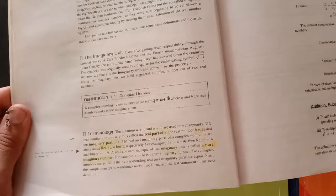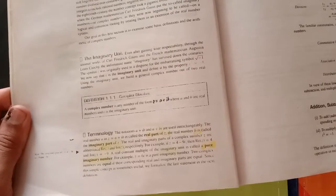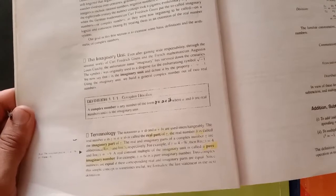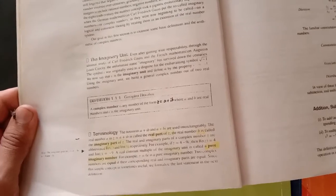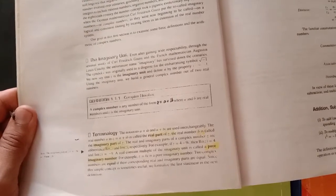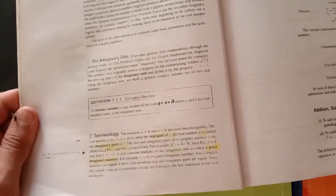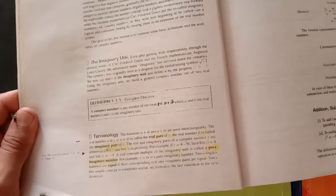Yaha par mukhtalif terminologies ishtimal hooti hai. Pehle ham us ka notation find karte hain ke complex number ka notation kis tarah hogi. To A plus iota B bhi likh sakte ho ya A plus B iota bhi ham likh sakte hain. Ye interchangeable hai.